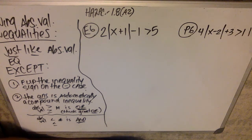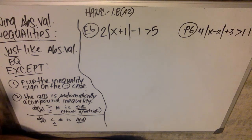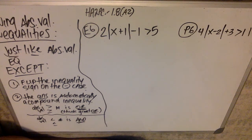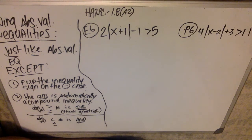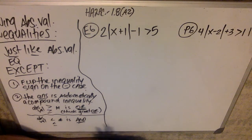This is just like solving absolute value equations, except for two things. Number one, when you do the negative case on the absolute value, you need to flip the direction of the inequality sign. Number two, the answer of these absolute value inequalities is automatically a compound inequality, and you're either going to need to use the word 'or' or the word 'and'. But to make that decision, you have to wait until you solve down to the absolute value.